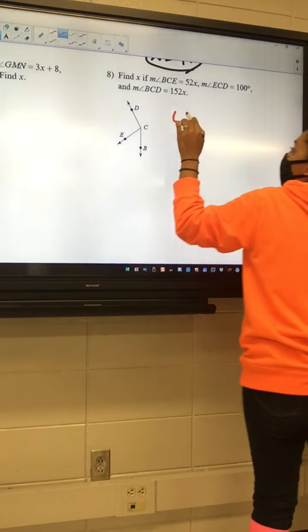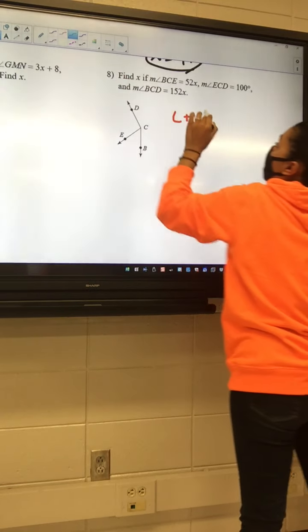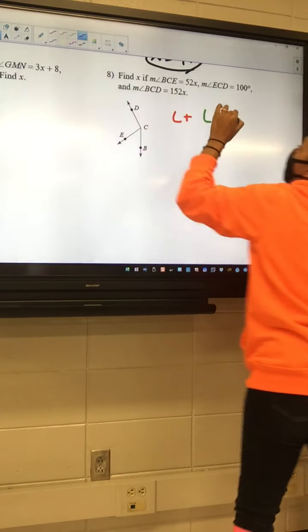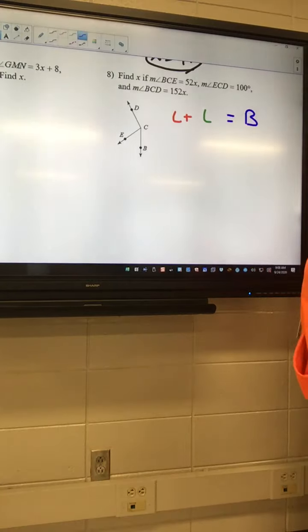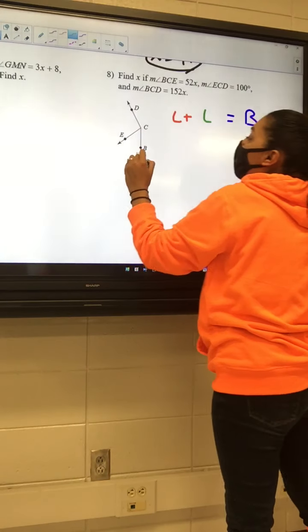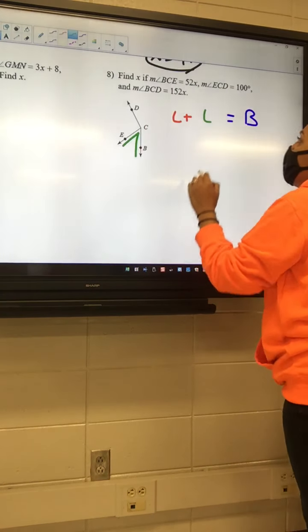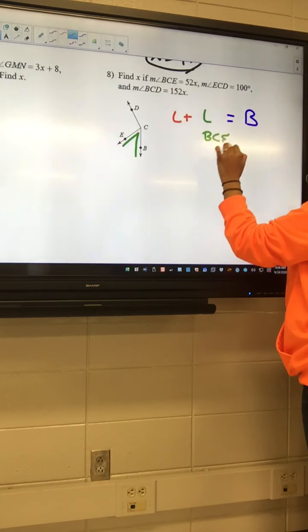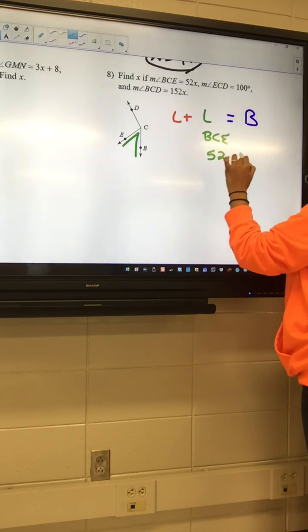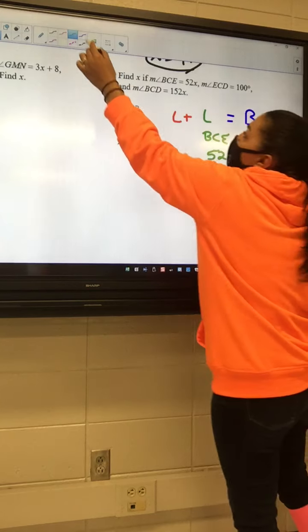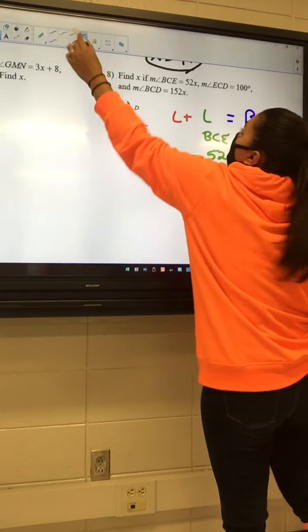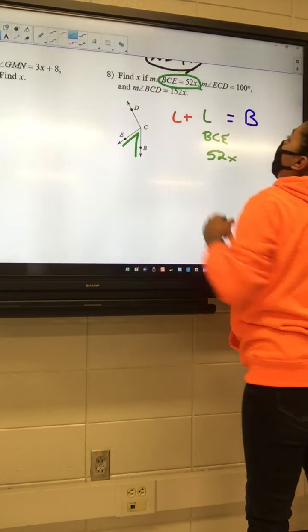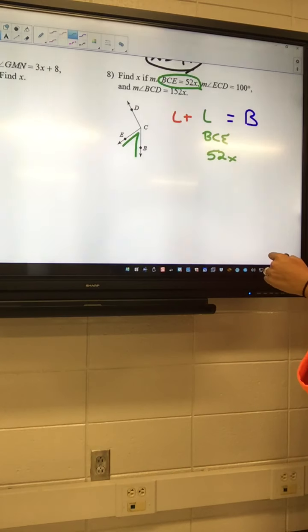Okay, so on this one, I got a little plus a little equals a big. BCE equals 52X. Okay, BCE. Is it going to be a little one? So BCE. It's 52X. I think that's a little one, but I could be wrong. And then I got, yep, it is E, C, D is 100 degrees.